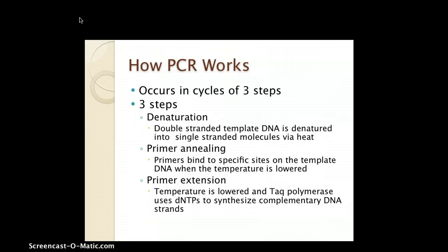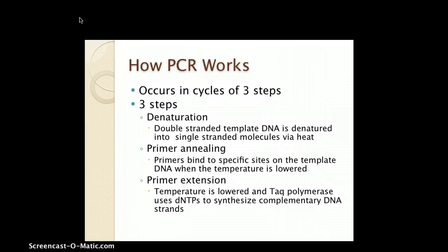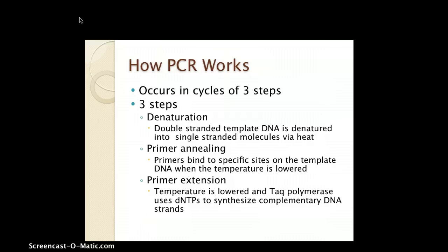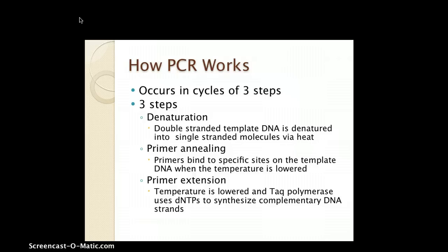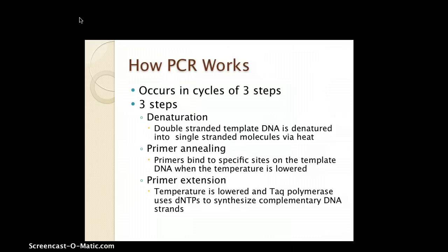How does PCR work? There are three major steps. Step one is denaturation, where the double-stranded template DNA is denatured into single-stranded molecules through heat — raising the temperature to 94°C. We don't use helicase because we would need other proteins to keep the DNA molecules separated, and it would be unnecessarily destroyed. Instead, we use heat to break the hydrogen bonds between the double-stranded DNA.